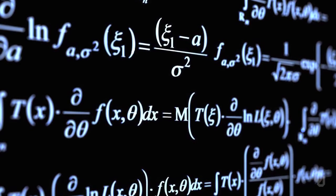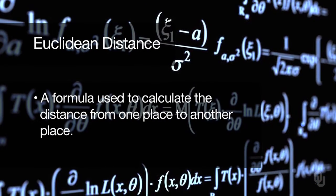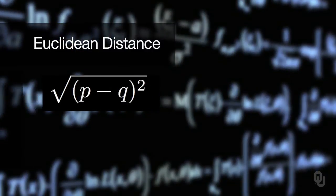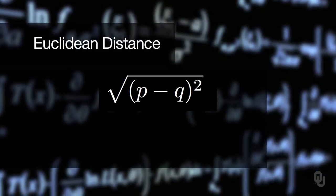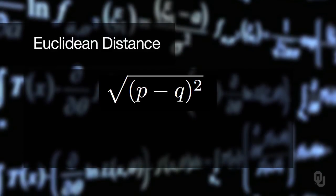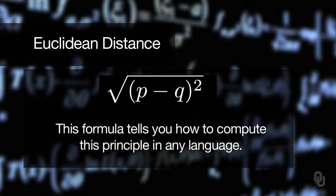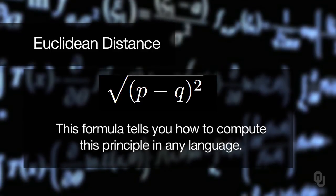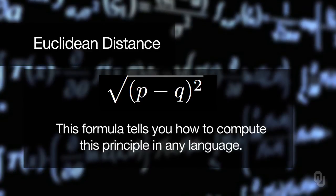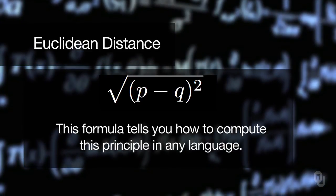Let's consider for example Euclidean distance — that is trying to calculate the distance from one place to another. The formula is: if you're trying to find the distance from one point to another, you take the square root of the sum of the squared differences between the two. That looks like a formula and it is a formula, but it also tells you exactly how you can compute it in any language, whether SNAP or any other programming language.